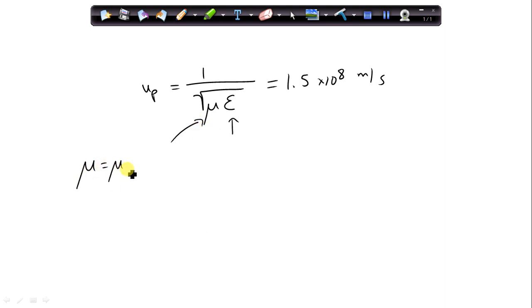Now remember mu is equal to mu naught times mu r, so for mu naught we have to plug in 4 pi times 10 to the minus 7. Mu r is given as 2.4.